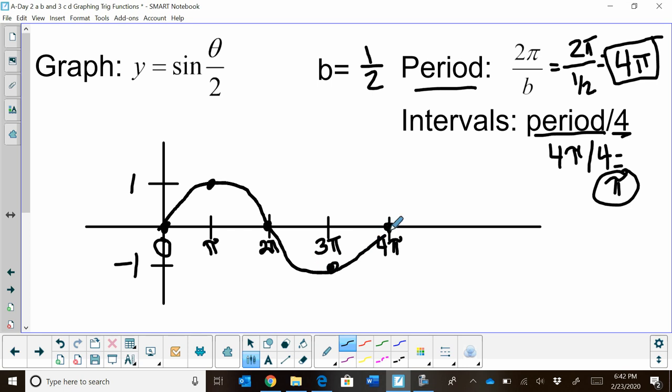And I'm going to throw an arrow on each end because it is a continuous function. We are only graphing one period. You can graph more or less or part of it, but that's how you would graph sine of theta over 2 or theta halves.